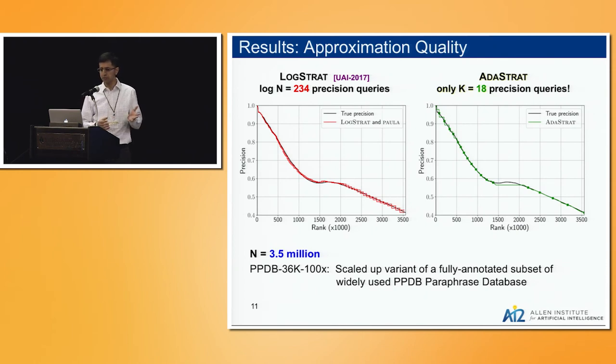I've got a couple of slides on the results. LogStrat is the algorithm from last year, AdaStrat from this year. This is a data set where we started with the real data that only had about 35,000 points annotated, and we scaled it up with random perturbation to 3.5 million points. In both cases, the true curve is in the back and these are approximations that look like zigzag lines. They are pretty good.